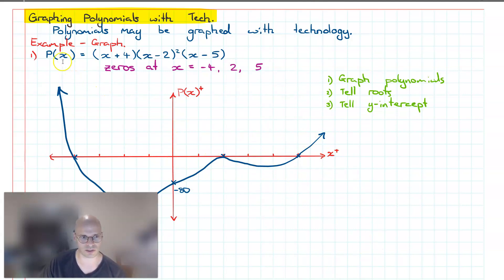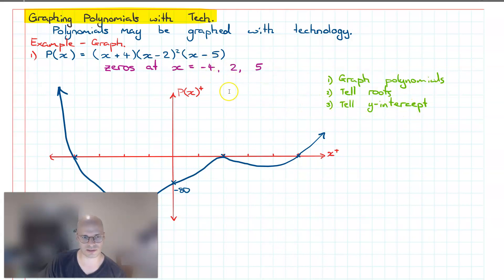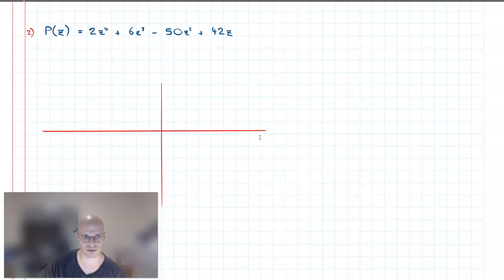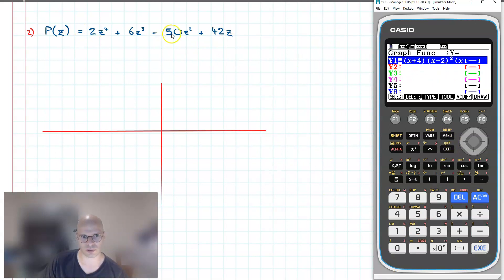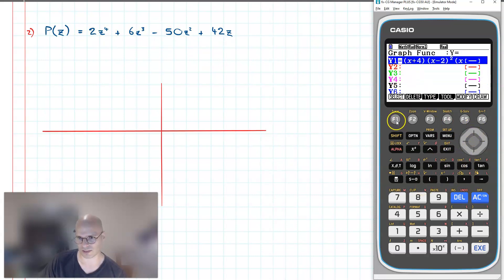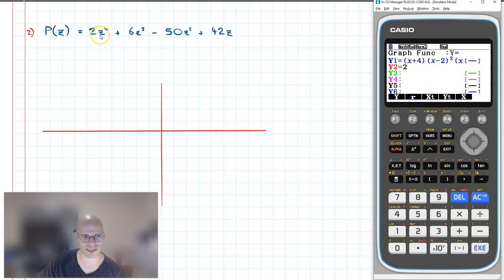So what we've looked at is how we can graph this polynomial in its factorized form with the aid of technology — using technology to visualize what the polynomial looks like, verify the roots, and tell us the y-intercept. Now let's have a look at an example when we're not in factorized form — when we're in expanded form. The process is more or less the same. We go back and plug the polynomial in. In this case, I have a polynomial in terms of z, but in the calculator I simply use x instead of z.